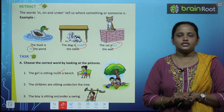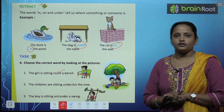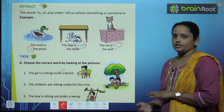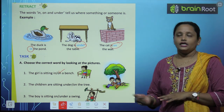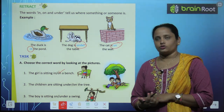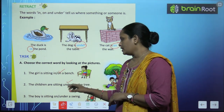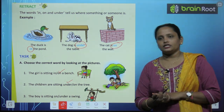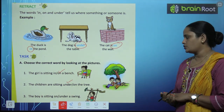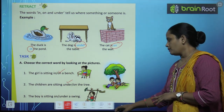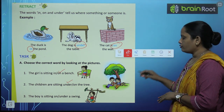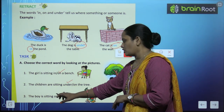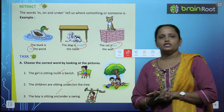The children are sitting under the tree, or on the tree? Tree ke neeche baithi hain, ya tree ke upar baithi hain? So yes, they are sitting under the tree. The boy is sitting dash a swing — swing ke upar baiha hai ya neeche? So yes, the boy is sitting on the swing.